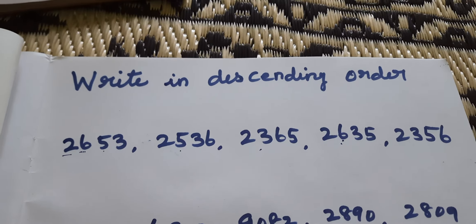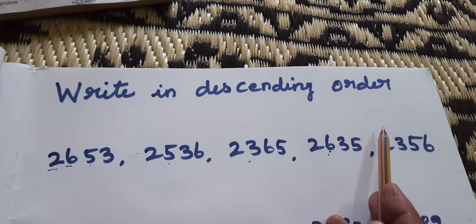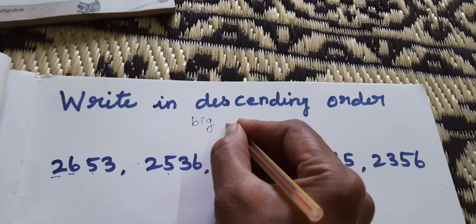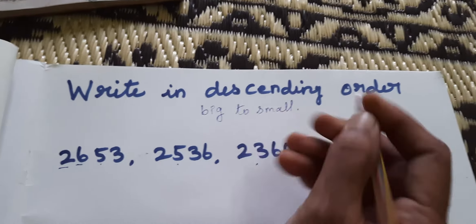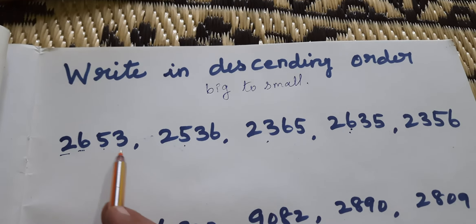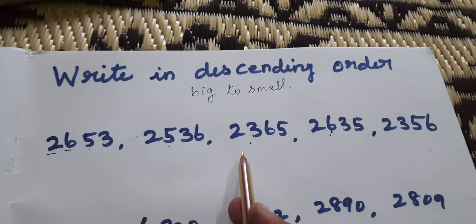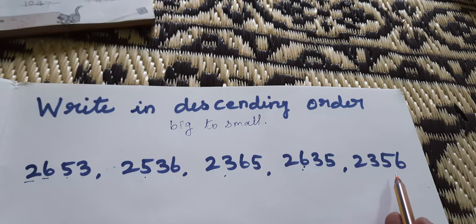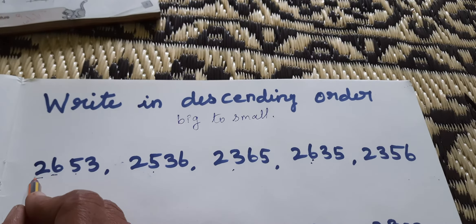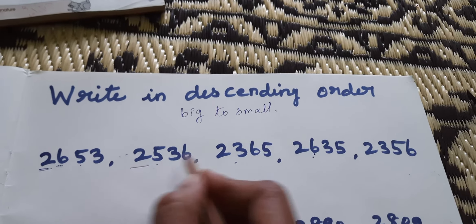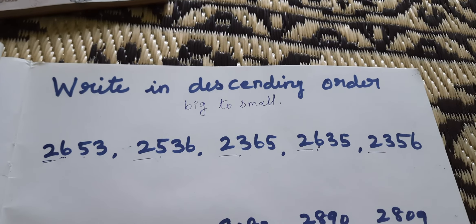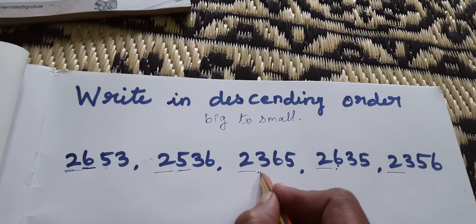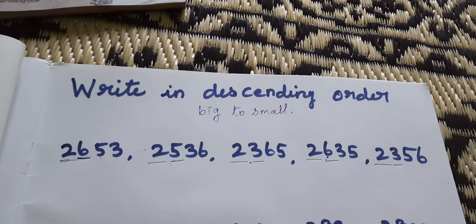Next, write in Descending Order. Descending Order means big to small. The numbers are: 2653, 2536, 2365, 2635, 2356. Which one is the big number? Thousands place: 2000, 2000, 2000 — all the same. Hundreds place: 600, 500, 300, 600, 300. Which one is the big number?